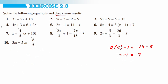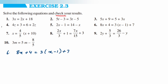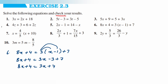The sixth problem is 8x plus 4 is equal to 3 into (x minus 1) plus 7. First, open the bracket: 8x plus 4 is equal to 3x minus 3 plus 7, which simplifies to 8x plus 4 is equal to 3x plus 4. Transpose 3x to the left and 4 to the right: 8x minus 3x is equal to 4 minus 4, so 5x is equal to 0.